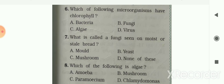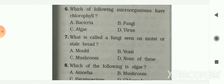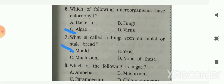Next question: which of the following microorganisms have chlorophyll? Options are bacteria, fungi, algae, or virus. Algae is the microorganism which has chlorophyll. The next: what is the fungi seen on moist or stale bread? Options are mold, yeast, mushroom, or none of these. Your answer is option A — mold. A fungi seen on moist or stale bread is known as mold.